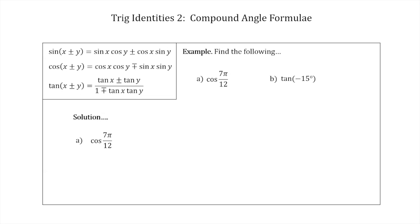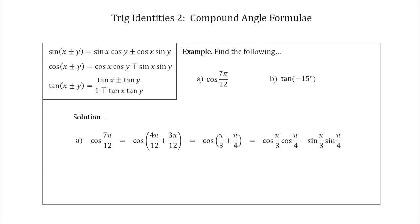For Example A, we want to rewrite 7π/12 as the sum of two angles whose cosine and sine values we know. We write it as cos(4π/12 + 3π/12). Simplifying, 4π/12 = π/3 and 3π/12 = π/4. Now applying the compound angle formula: cos(π/3 + π/4) = cos(π/3)cos(π/4) − sin(π/3)sin(π/4).